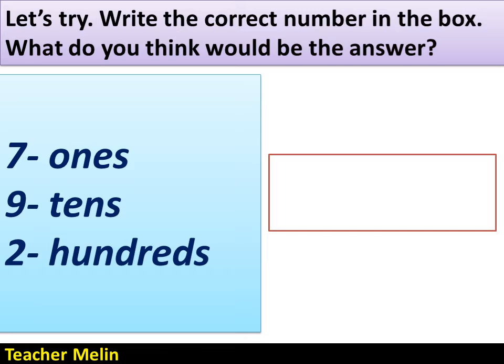Another number: 7 ones, 9 tens, and 2 hundreds. The correct answer is 297.